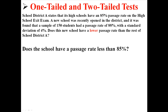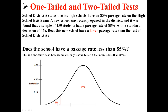We could also ask if it's lower: does the school have a passage rate that is less than 85%? This is a one-tailed test because we're only testing to see if the mean is less than 85%, so it would look just like that with the alpha on the bottom, below the expected 85%.